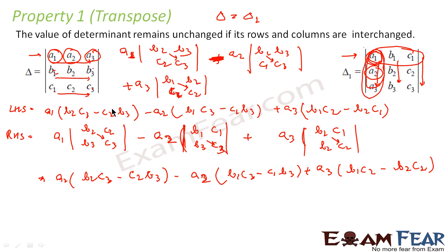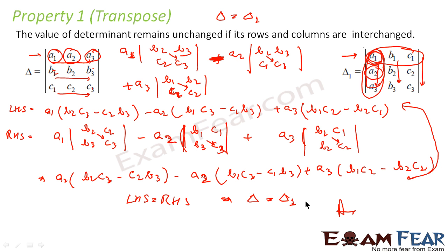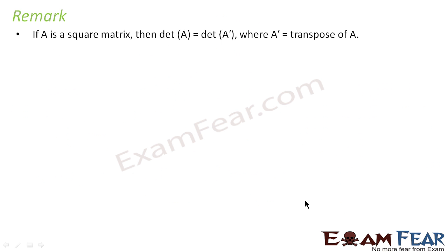You can see that this value and this value are exactly the same — both are equal. So I can say that LHS equals RHS, meaning the determinant of the original matrix equals the determinant of its transpose, and that is how we prove it. Remark: if A is a square matrix, then determinant of A equals determinant of A transpose. It must be a square matrix for the determinant and transpose to both exist.